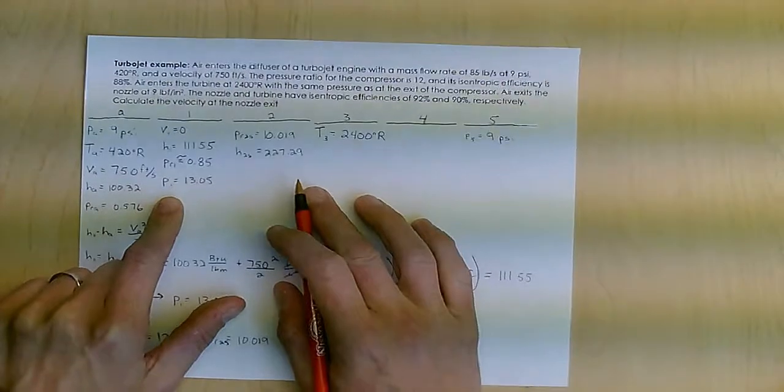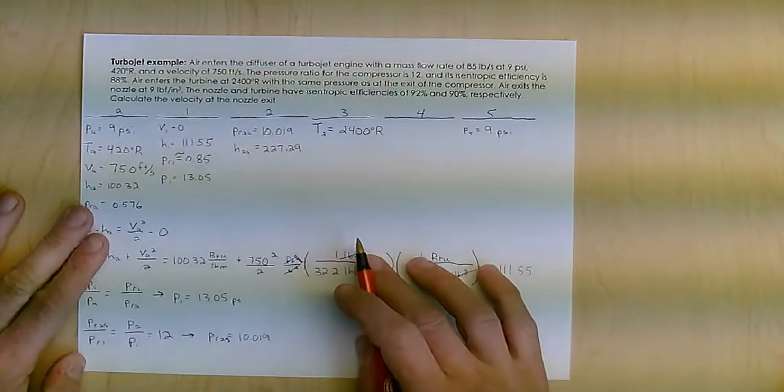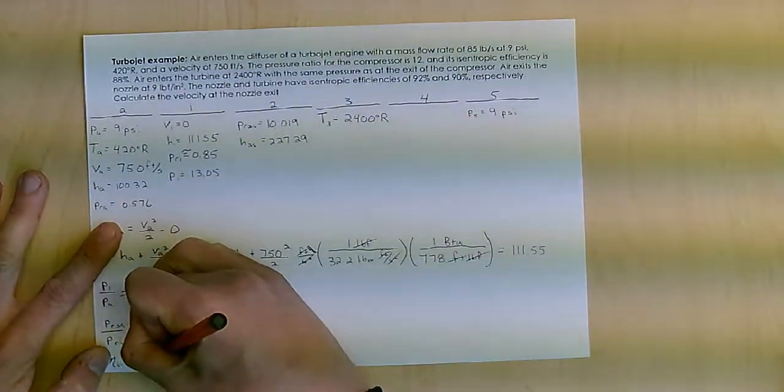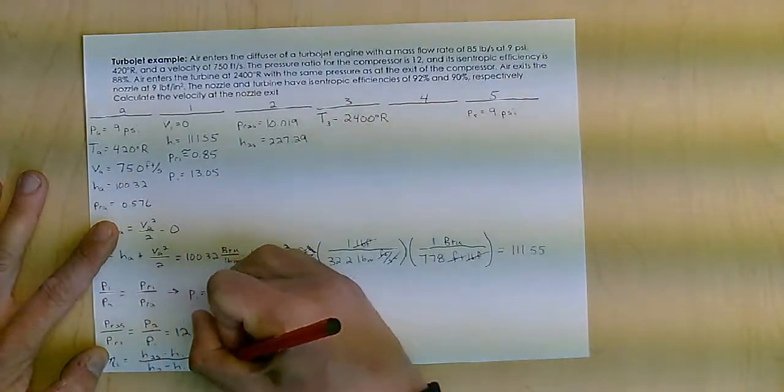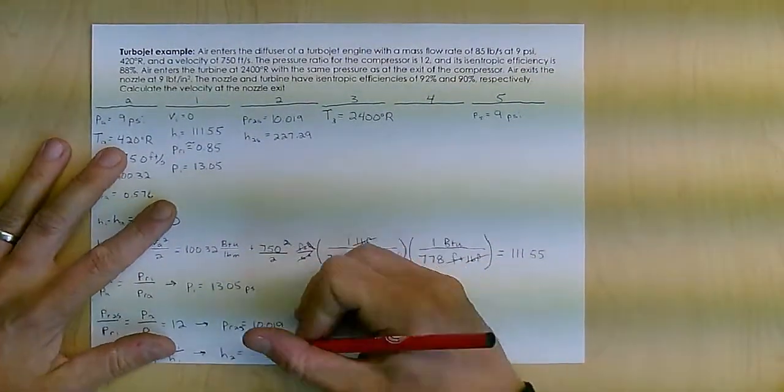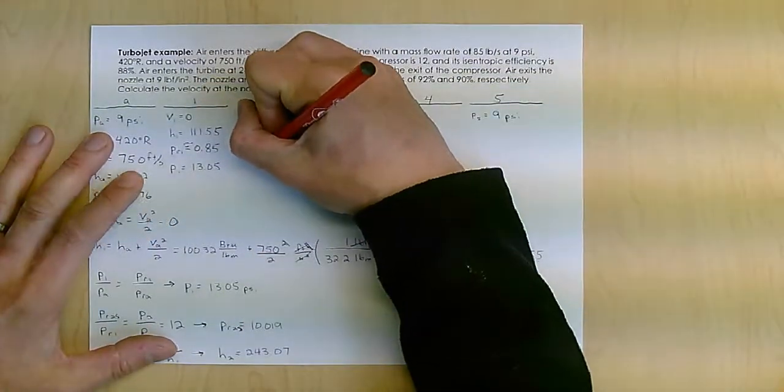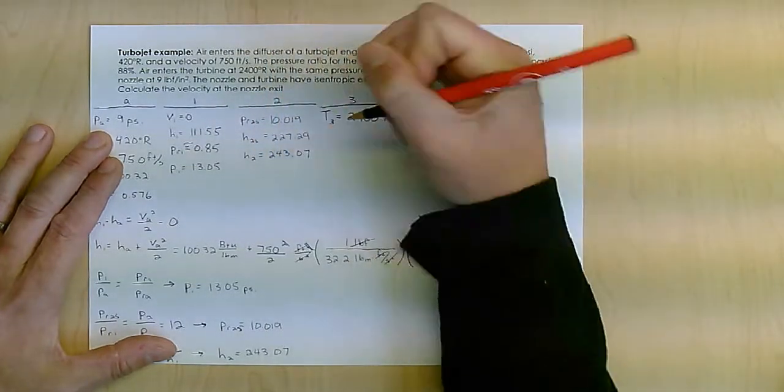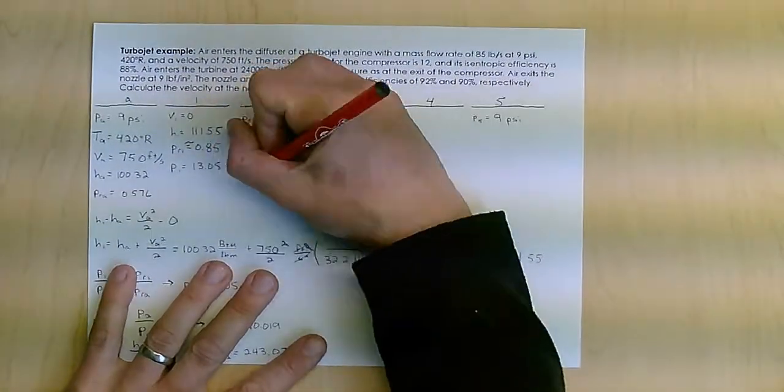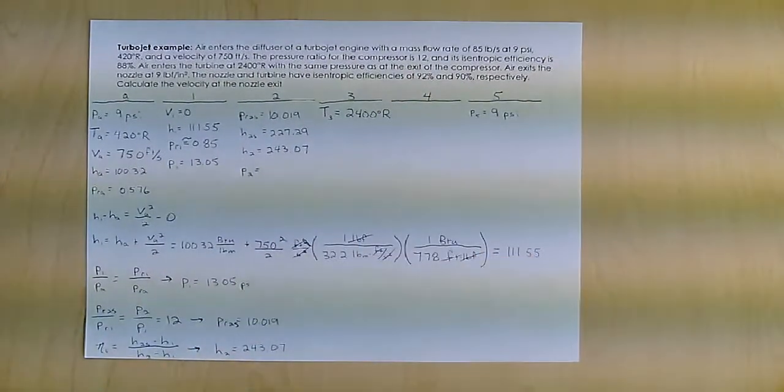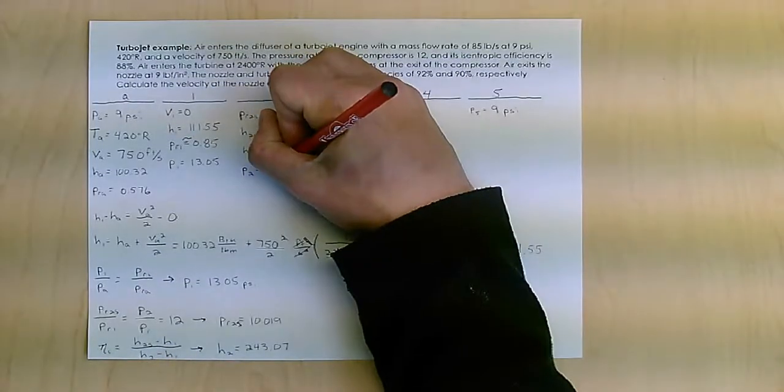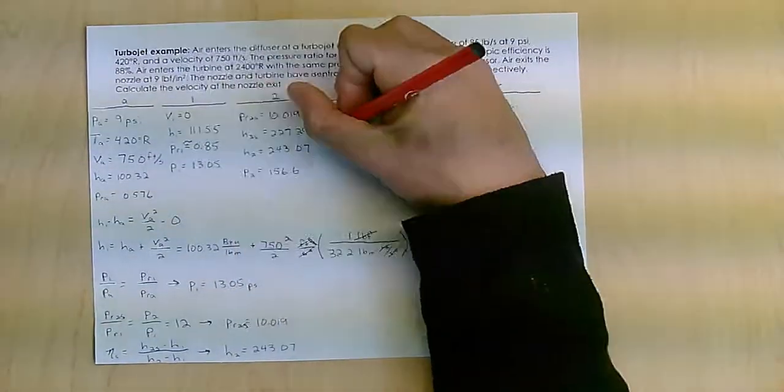Now, my pressure, wait, hold on. Let me go ahead and find my H2 because that's what I have next in my notes. I'm going to use the fact that I have a compressor efficiency of 80%. And I'm going to use H2S minus H1 divided by H2 minus H1. Again, I know everything here. I know the compressor efficiency. I know H2S. I know H1. That gives me H2 equal to 243.07. So that means H2 is 243.07. And I can find my pressure at 2 because, again, I know my compressor efficiency is just 12. So it's just 13.05 times 12, and I get 156.6, which is also, because now I go into the combustor, that's also P3.